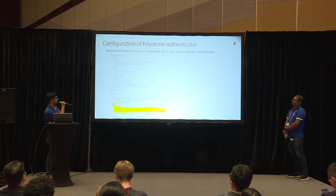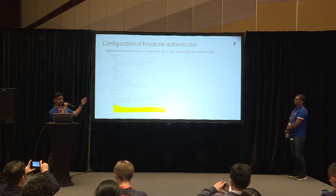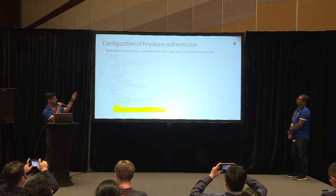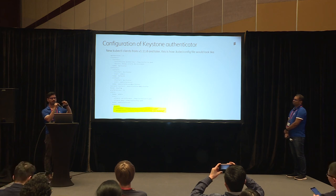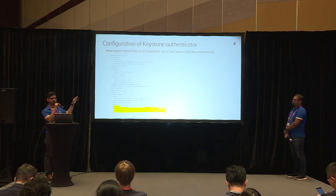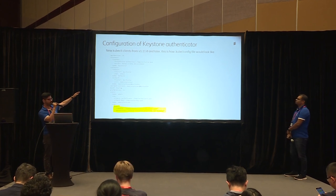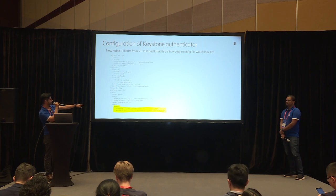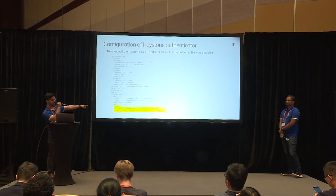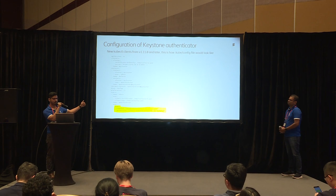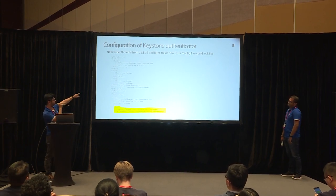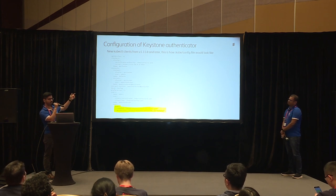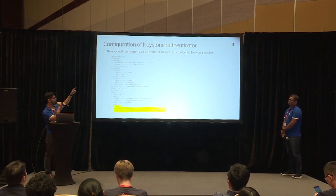That was on the server part. This is an example config file on the client side. You must have all configured kubectl config in the .kube/config file. This is how you would need to make modifications. The highlighted section is basically doing an exec, and this is the authenticator that is used in order to authenticate against Keystone. You will need to add this section, create a context, and once you create the context, you can route all the calls to the webhook API server.